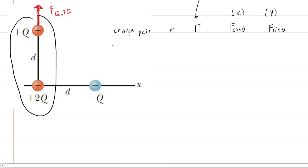What we'll also do is fill in some values into the following chart. We have labeled charge pair first in this chart. In this case, the charge pair would be between Q and positive 2Q — they're both positive. R is going to represent the distance between them. We can see from the figure that the distance between them is D.